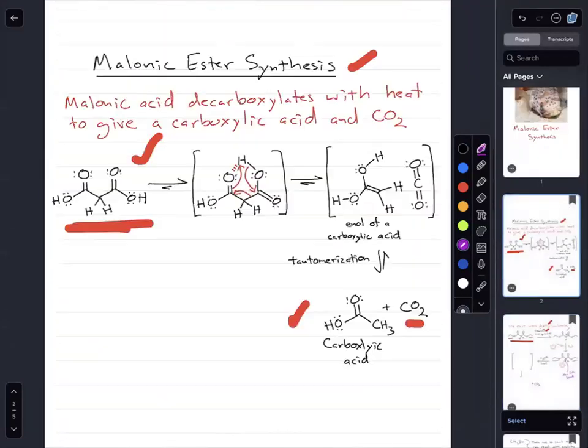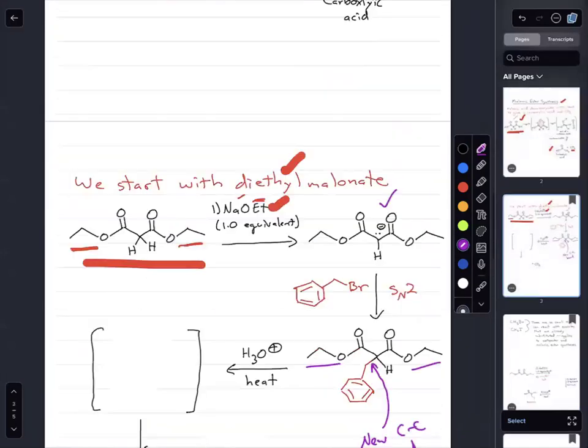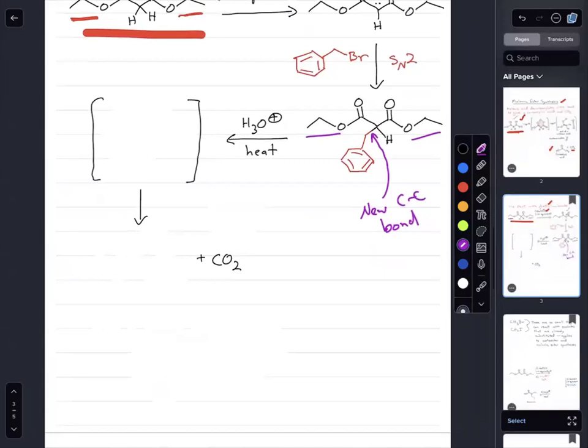That beta-diacid, malonic acid, will decarboxylate when we heat it. So when we add H3O+ and heat, we're going to first hydrolyze off these esters. And then with the heat, we're going to decarboxylate.